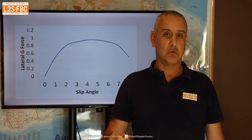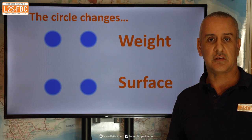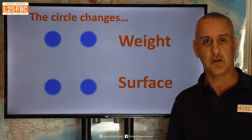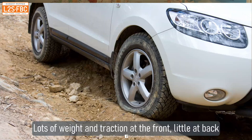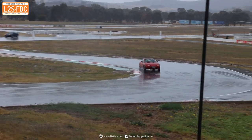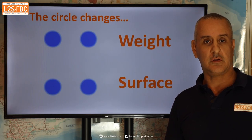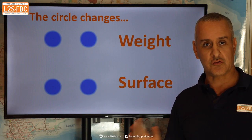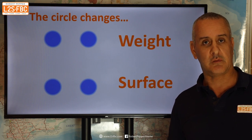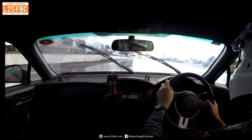Dirt roads are a different situation — you actually do want to drift on those. The circle of grip isn't static; it constantly changes in two main ways: the amount of weight on the tyre and the nature of the surface. More weight means greater grip; less weight means less grip. A wet, dry, loose, or muddy surface massively changes grip. Between weight and surface, the grip level is constantly changing for each tyre — especially critical in performance driving, whether in a four-wheel drive, a race car, or anything else.